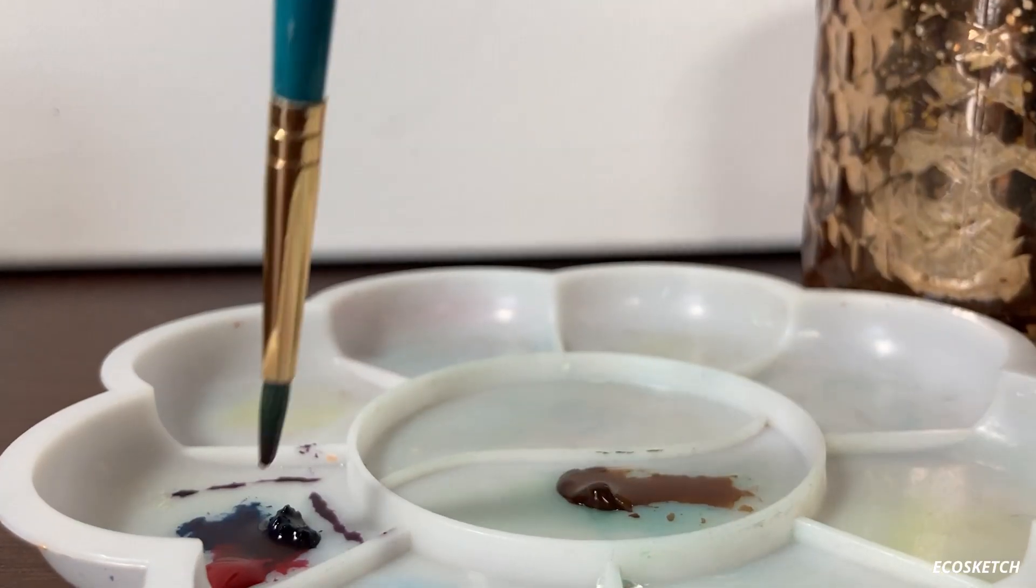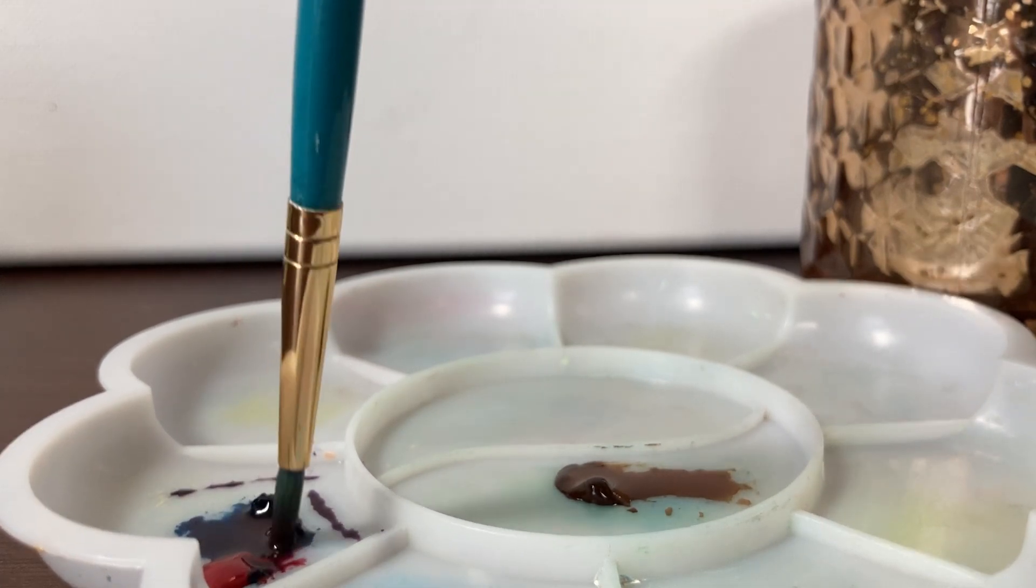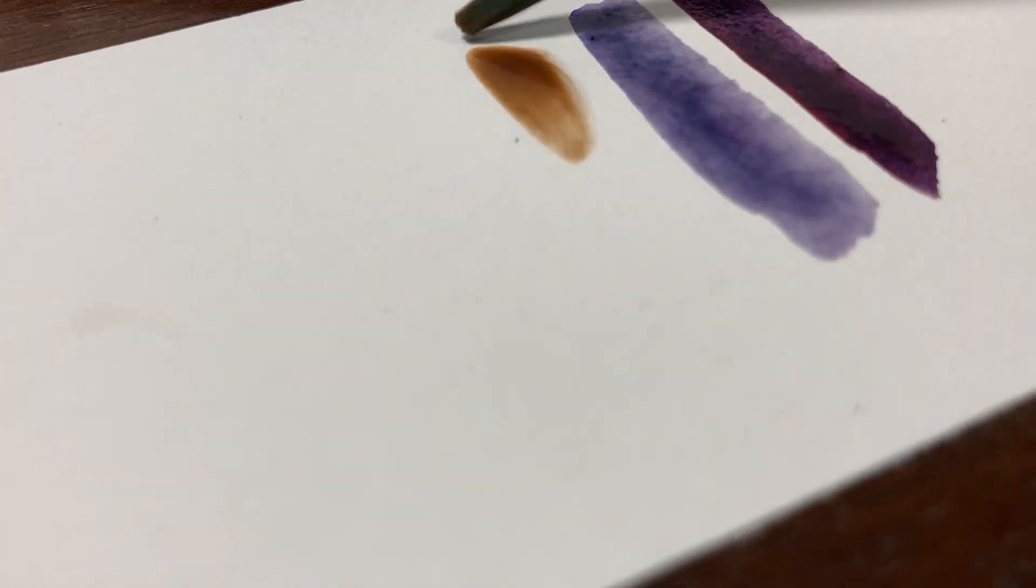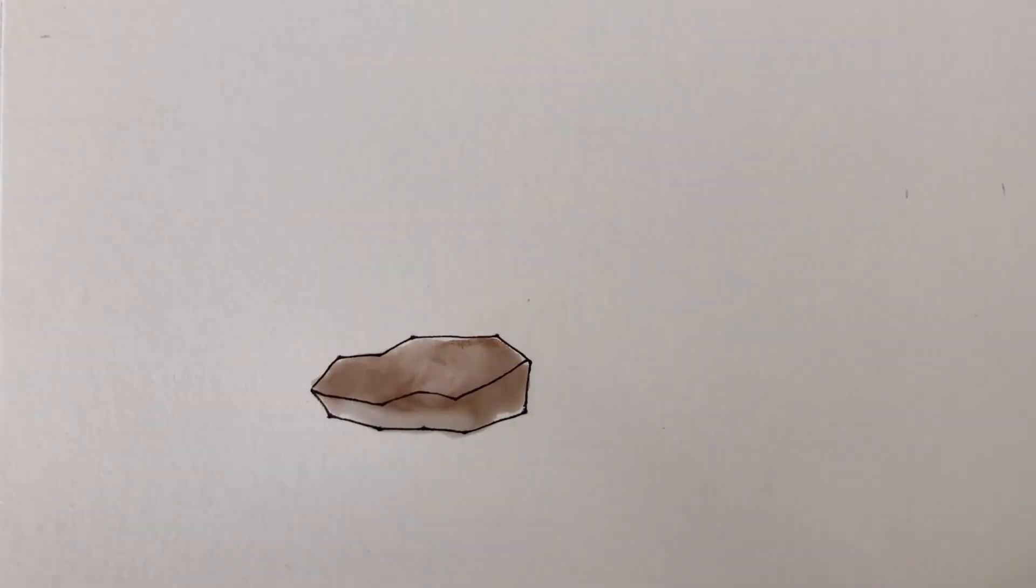Then, I mix in some prussian blue and crimson to add shadows. I prefer a bluer shadow as it contrasts the brown a bit better than the first swatch. As I add in the shadow, I tend to keep it a bit more watery and light. Then, as it dries up, I'll build the tones and create a more opaque shadow. Dragging in the different paint pools helps the color blend in better.